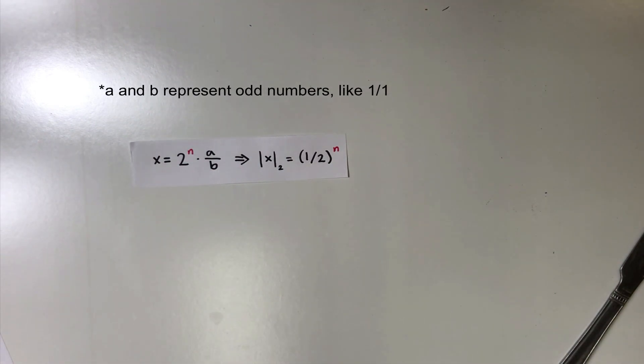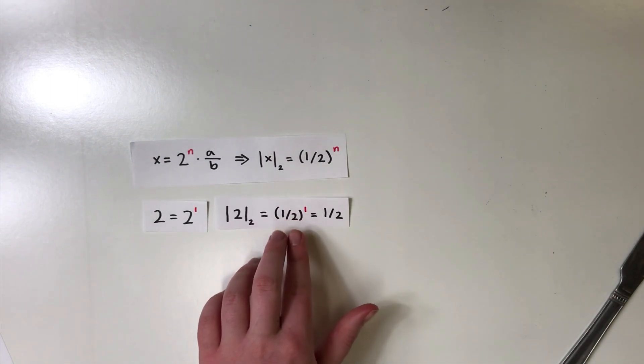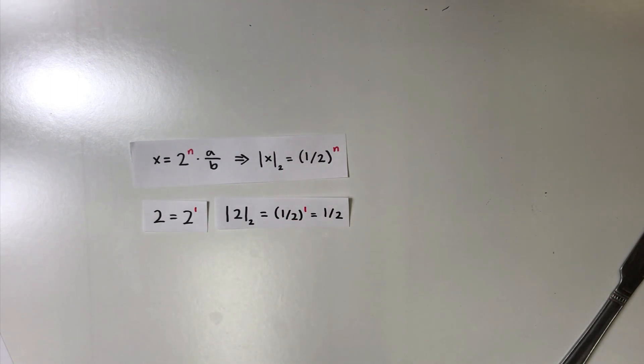For example, take a look at the number 2. 2 has 1 power of 2 in it, so then we see that n is equal to 1. This means that the 2-adic valuation of 2 is equal to 1 over 2 to the power of 1, which is 1 over 2.